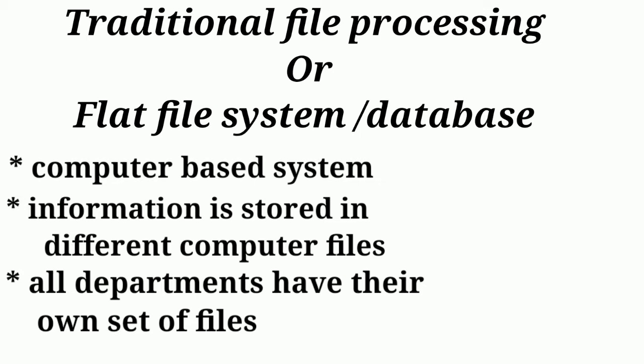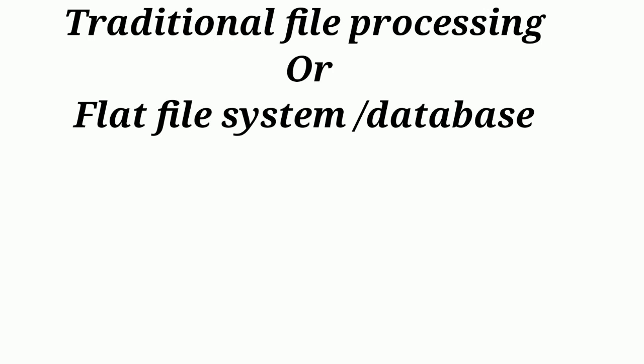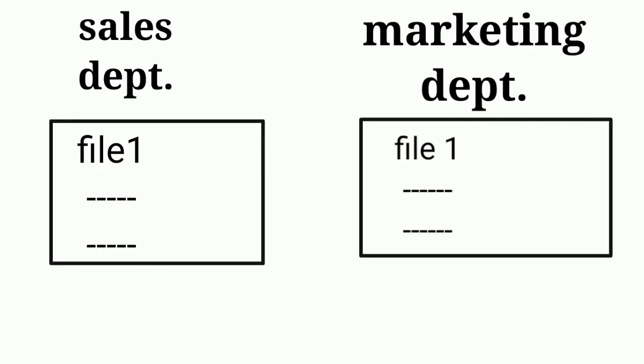Consider these three departments. The company stores information about a product. The sales department also needs the same product information, and the marketing department also needs the same product information. The product is saved in file 1, but each department keeps its own copy. When we store the same data in multiple copies, that is known as redundancy. Redundancy means the same data with multiple copies.